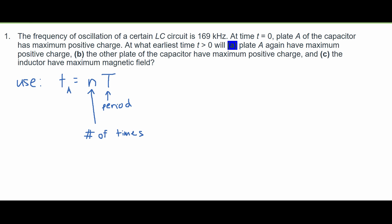We can also make note that T is equal to 1 over F. So period is equal to 1 over F, or frequency.